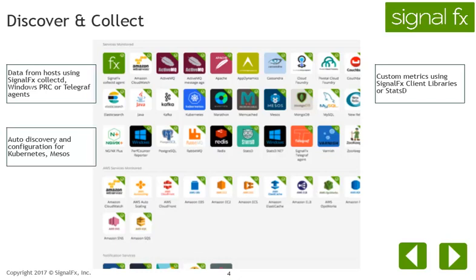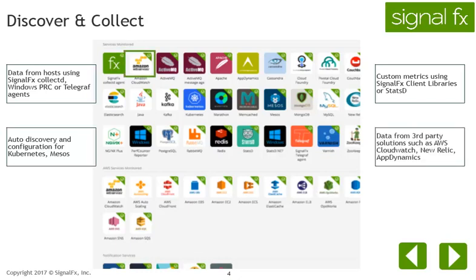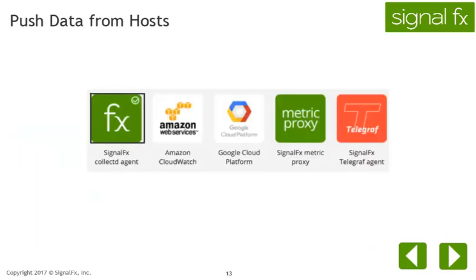Send in custom app metrics using SignalFX client libraries. Pull data from AWS CloudWatch, New Relic, or AppDynamics. SignalFX uses the open source collectd agent to collect metrics.